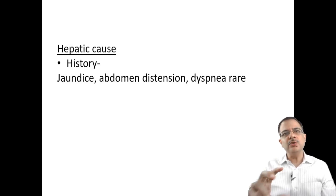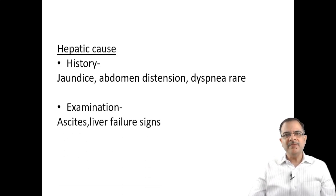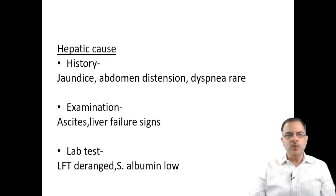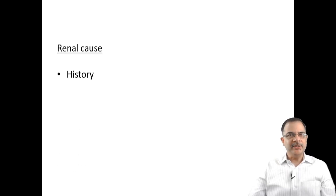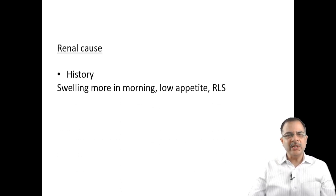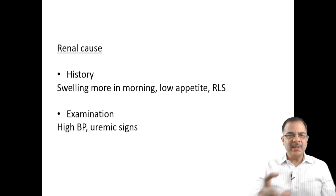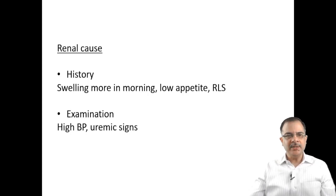For hepatic causes, history includes jaundice and abdominal distension suggesting ascites; dyspnea is rare compared to cardiac causes. Examination reveals ascites and liver failure signs: icterus, gynecomastia, spider nevi. LFTs are deranged and albumin is low. For renal causes, swelling is more in the evening and in the facial area where loose connective tissue is present. Low appetite and restless leg syndrome may be present. On examination, blood pressure is high — maximum among the three etiologies — with uremic signs such as pericardial rub. Lab tests show deranged KFT and proteinuria.